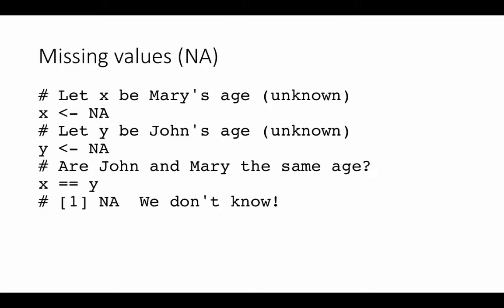When you apply functions like computing the mean or the median on a set of values that contains some unknowns, the system will be unable to compute the mean or the median because there are missing values, and the result will depend upon those missing values. So if you compute the mean of a set of numbers and there is at least one NA, the result is going to be NA.